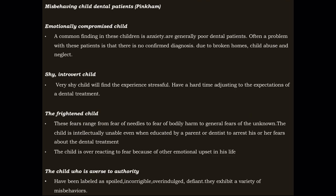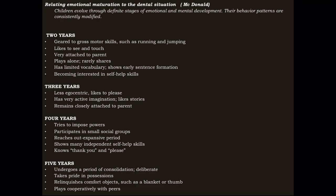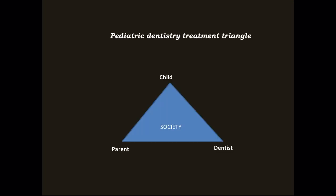Next is Pinkham's classification. He classified the behavior of a child into four classes: emotionally compromised, shy introvert child, frightened child, and child who is averse to authority. Next is McDonald's classification. He said that children evolve through definite stages of emotional and mental development and their behavior patterns are consistently modified, so he classified behavior according to age groups: two years, three years, four years, and five years.